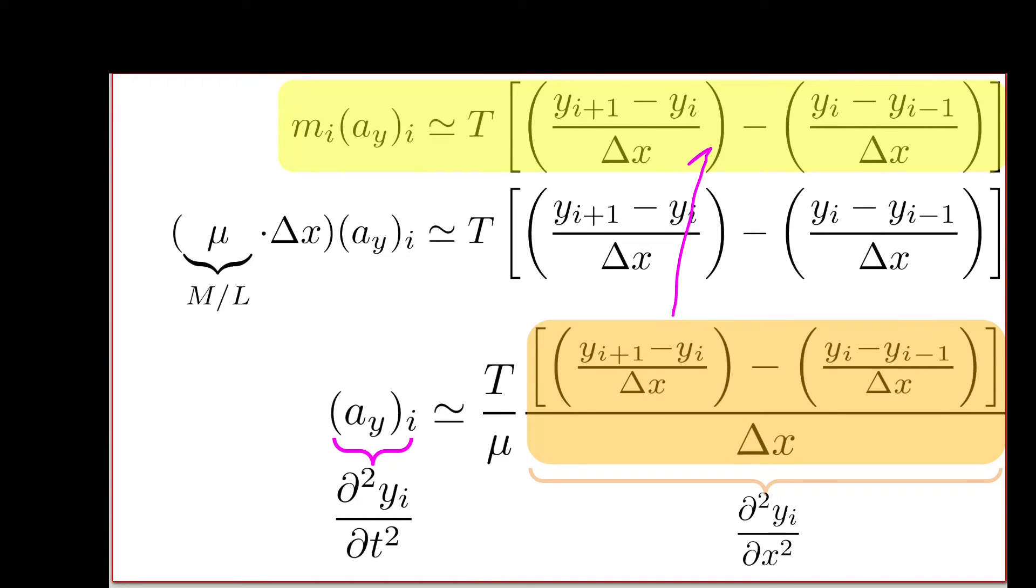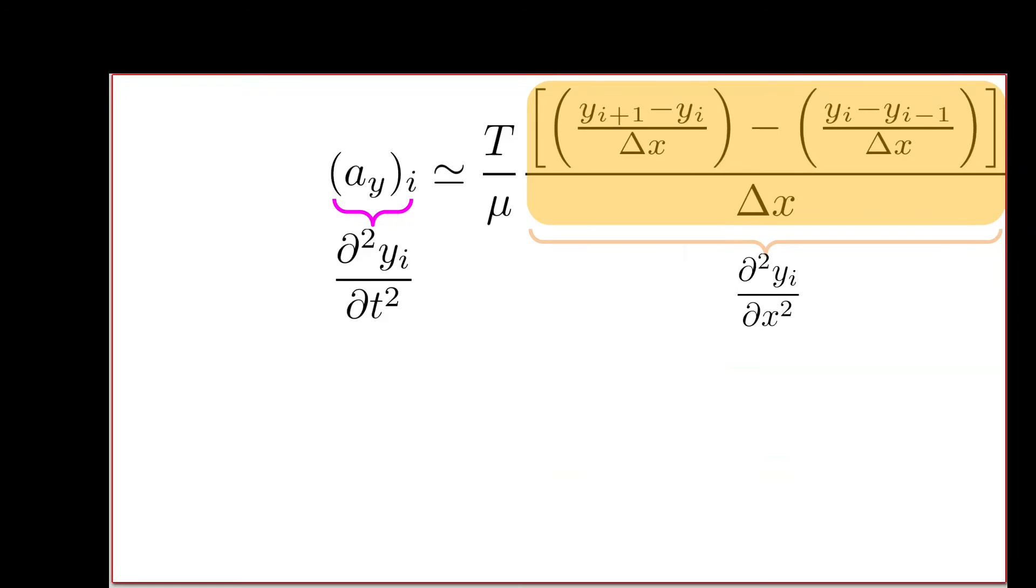So this relates back to our initial guess, our initial supposition that the curvature in time is proportional to the curvature in space via this combination of multiplicative constants, the tension divided by the linear mass of the string. We can write this more compactly in this analytical form relating the second partial derivative with respect to time to the second partial derivative with respect to space, and this equation is the model that we call a wave. An entity that has this relationship: its curvature in time is proportional to its curvature in space.